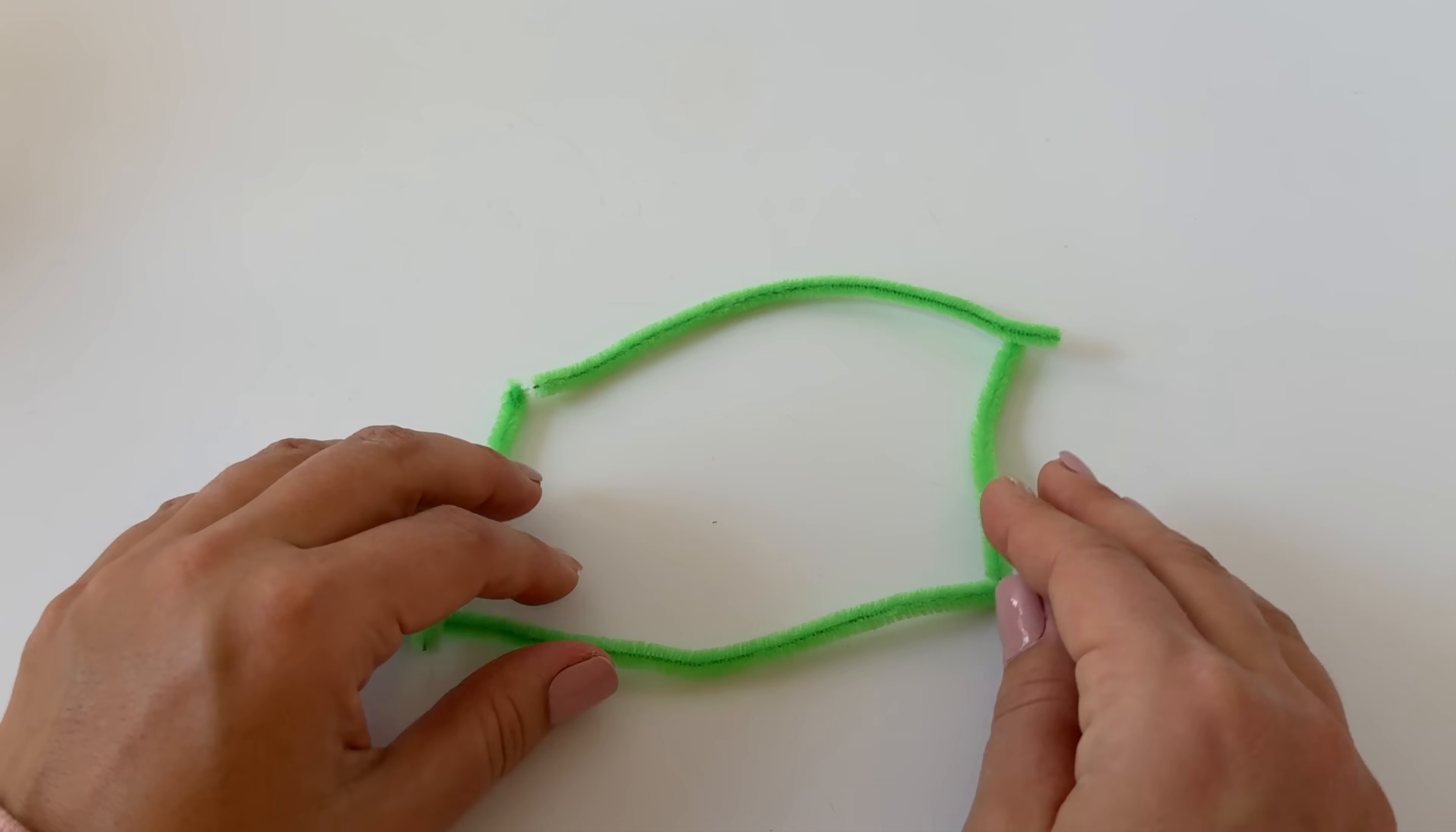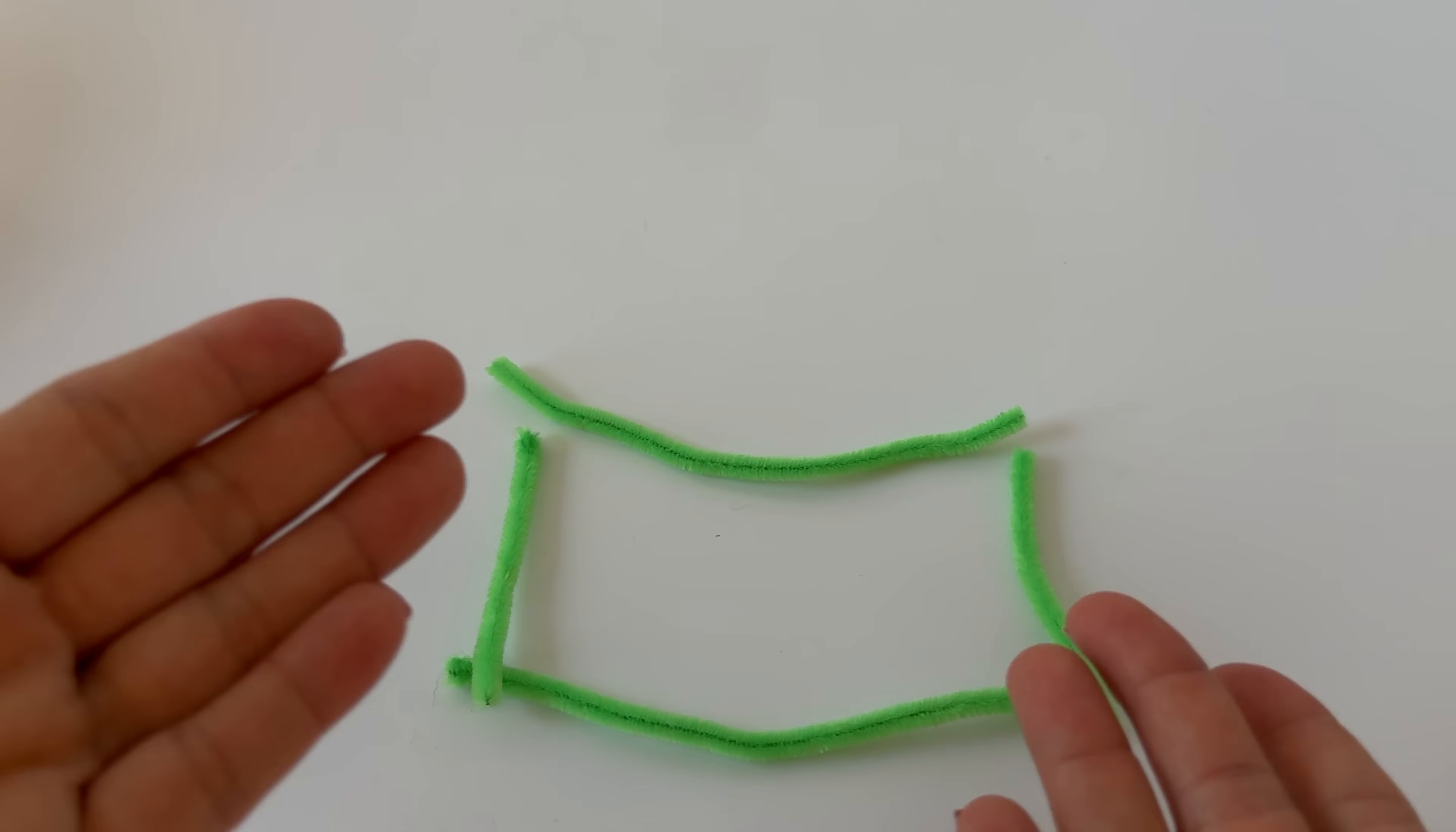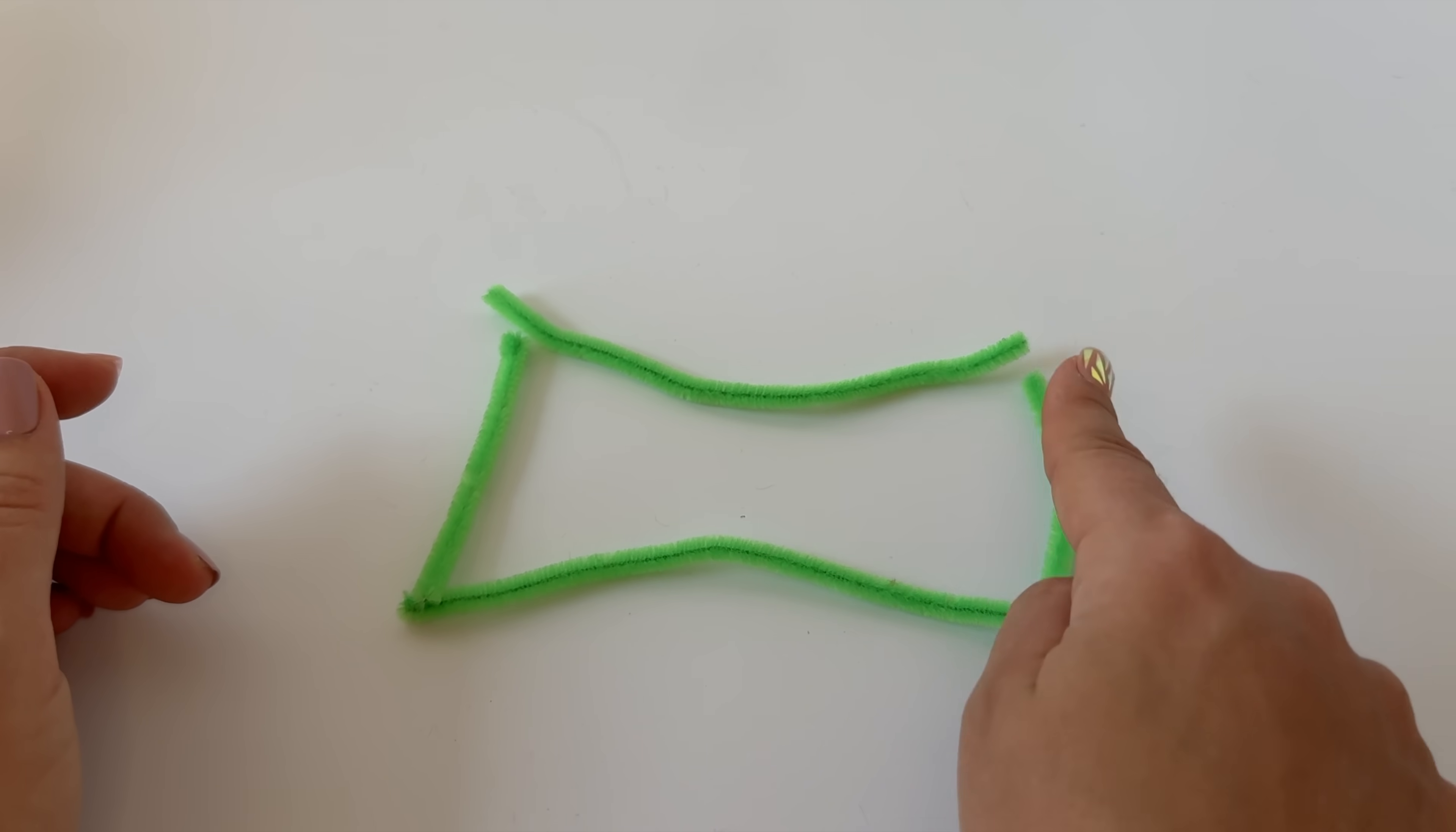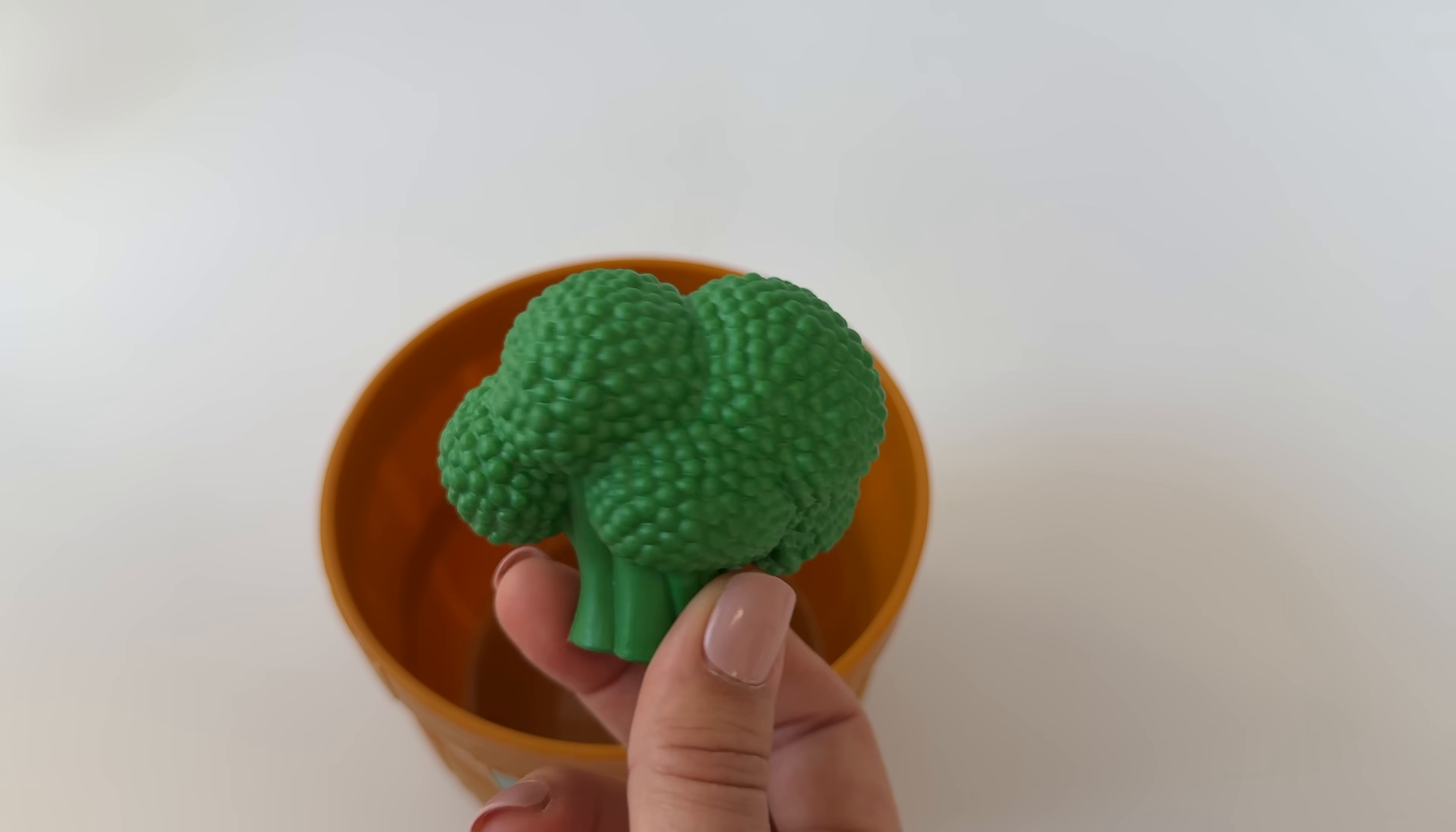I'm using pipe cleaners to make my shape. You can use anything that's straight or bendy to practice making your shape, like sticks or pencils, whatever you have at home. It's not perfect, but it's a rectangle. Two long sides and two short sides. What's in here? Broccoli. It's one green broccoli. One.